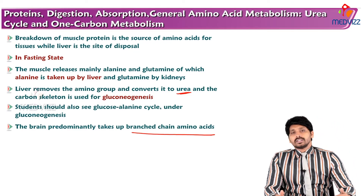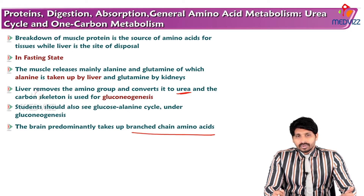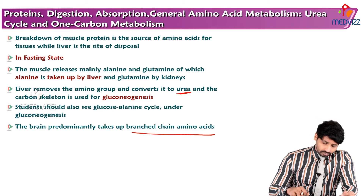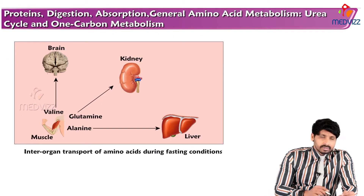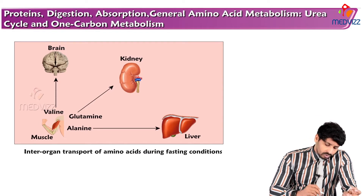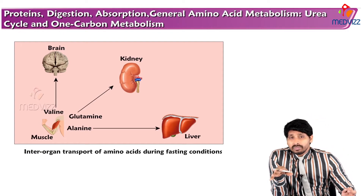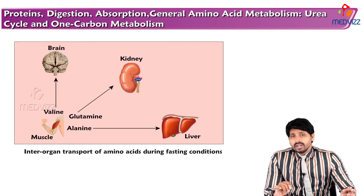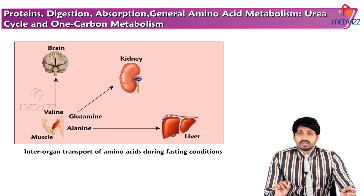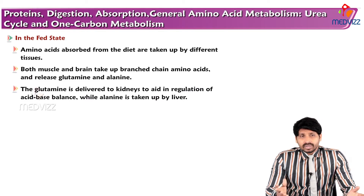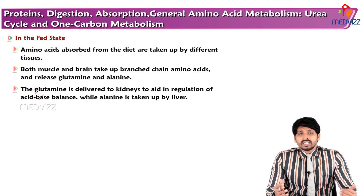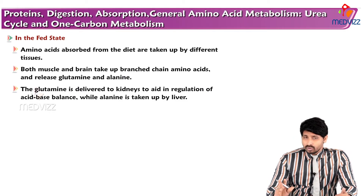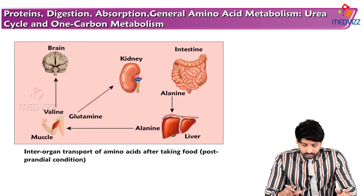The brain predominantly takes up branched-chain amino acids. Leucine is a ketogenic amino acid, and ketone bodies act as an energy source in emergencies. Valine is both glucogenic and ketogenic. Glutamate is sent to the kidney to form ammonium ions, which play a major role in the buffering mechanism of the body. Alanine from muscle is sent to the liver for gluconeogenesis, and the removed amino group is excreted as urea. Both muscle and brain take up branched-chain amino acids and release glutamine and alanine.